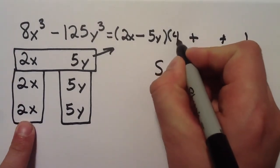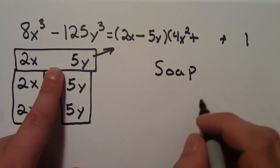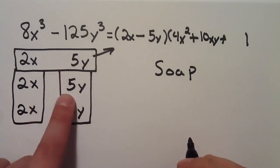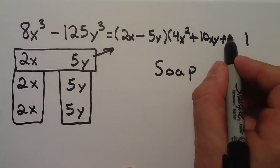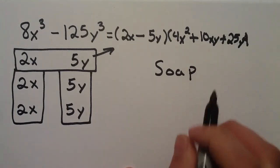2x times 2x, 4x squared. 2x times 5y, 10xy. 5y times 5y, 25y squared.